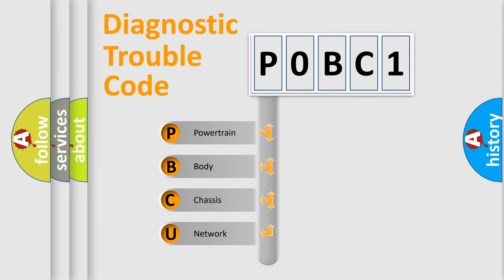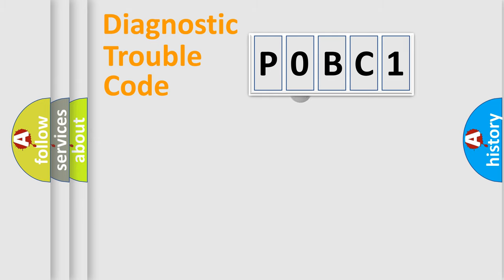We divide the electric system of automobile into four basic units: Powertrain, Body, Chassis, and Network. This distribution is defined in the first character code.